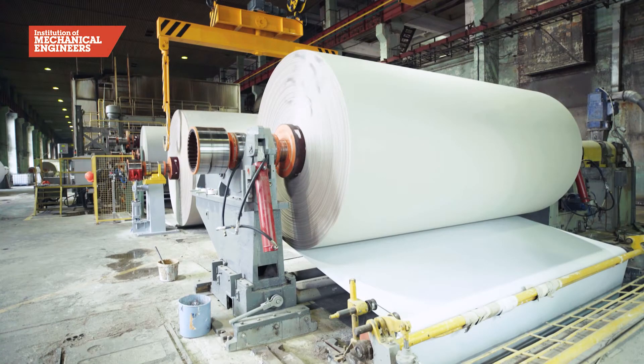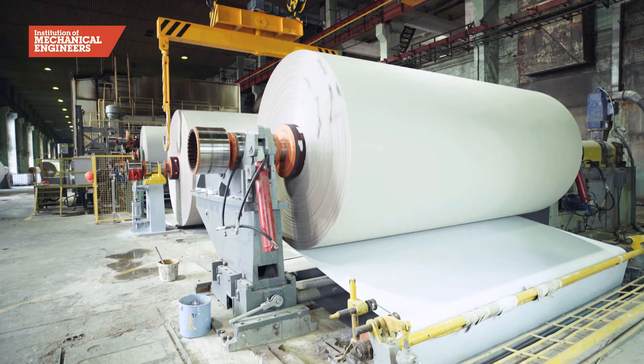The sheet is fed through large heavy rollers to remove excess water. Finally a coating is added to give the paper a smooth texture.